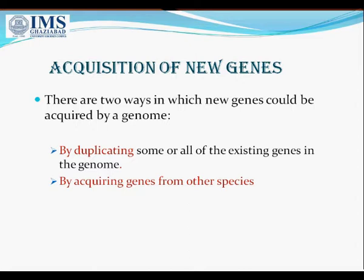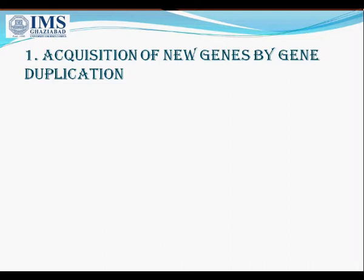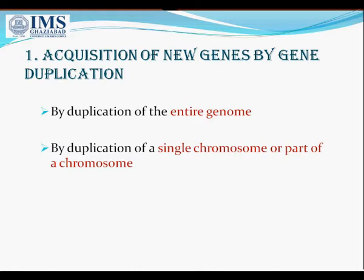The acquisition of new genes by gene duplication can occur in three ways. Number one, by duplication of the entire genome. Number two, by duplication of a single chromosome or a part of a chromosome. And number three, by duplication of a single gene or group of genes.